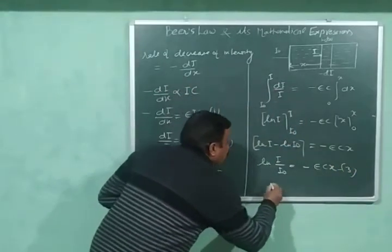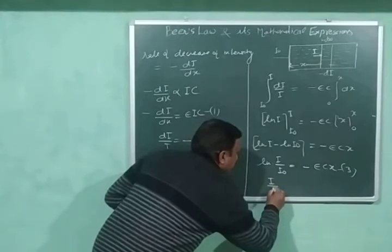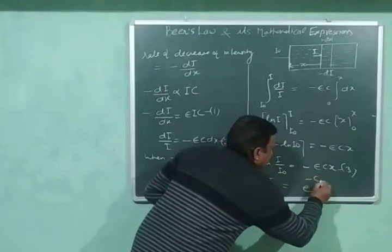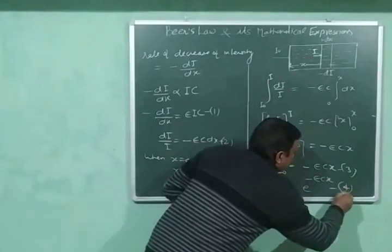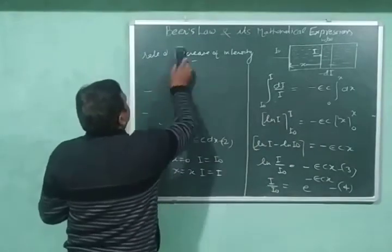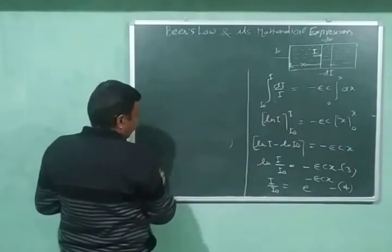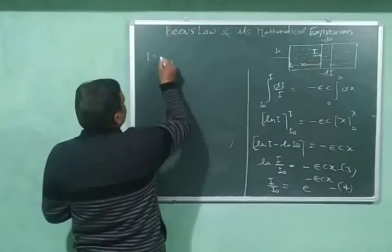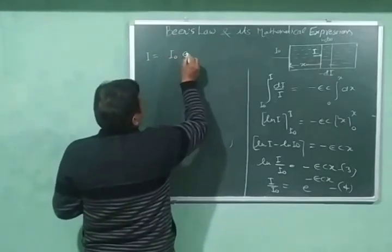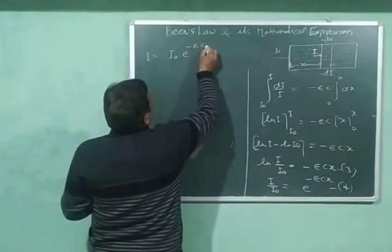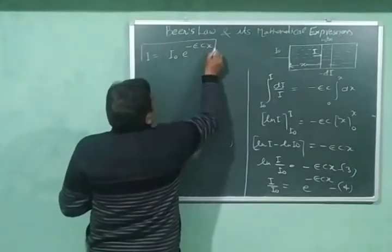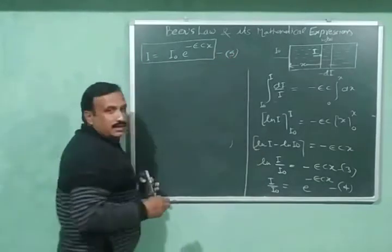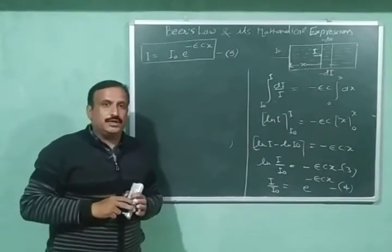From equation 3, we have I/I₀ = e^(−εCx). This is equation number 4. And therefore: I = I₀·e^(−εCx). This is equation number 5, and this is the first mathematical expression for Beer's law.